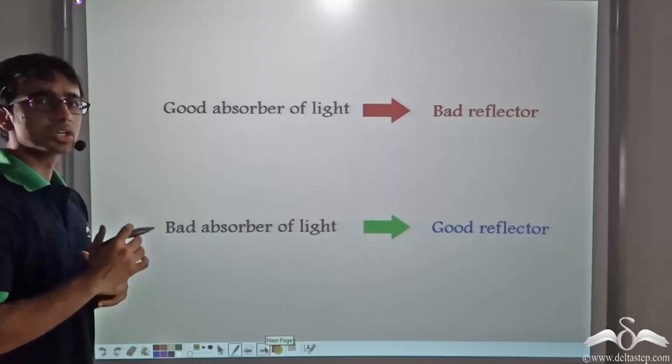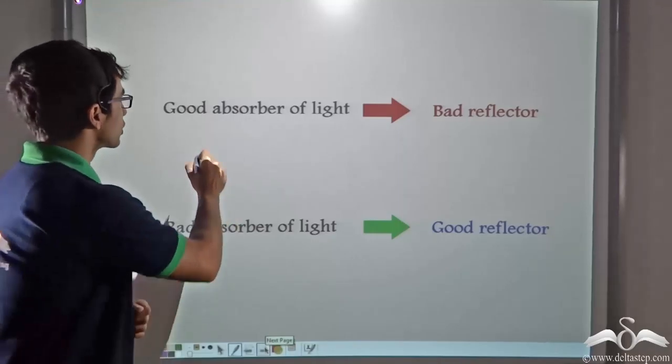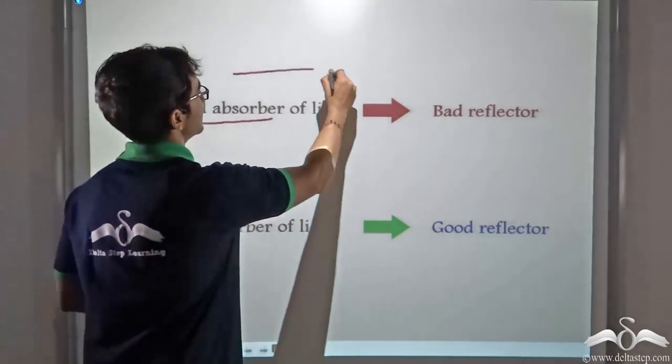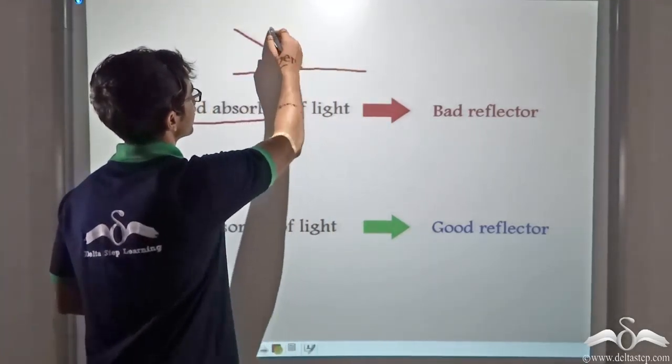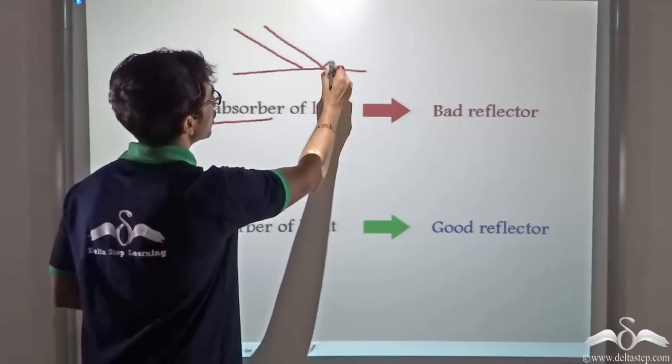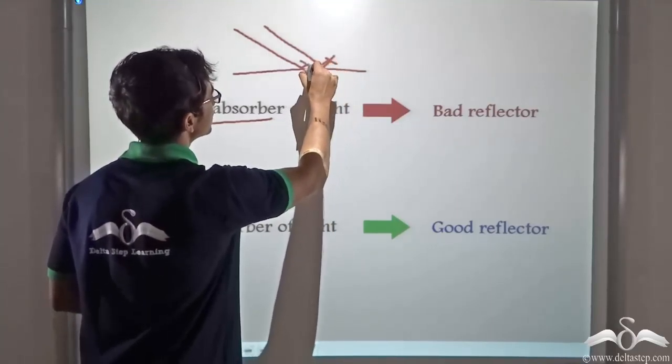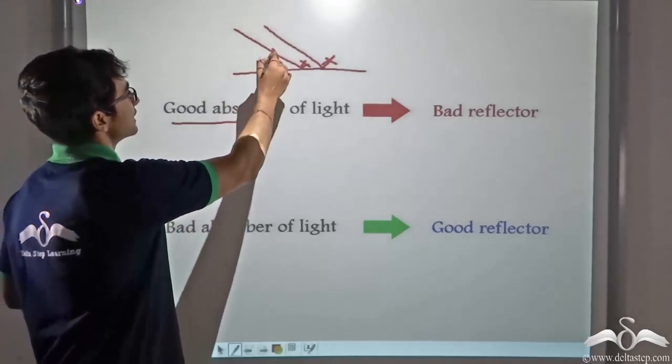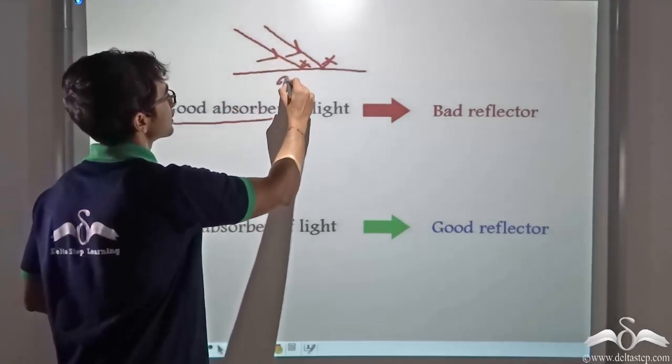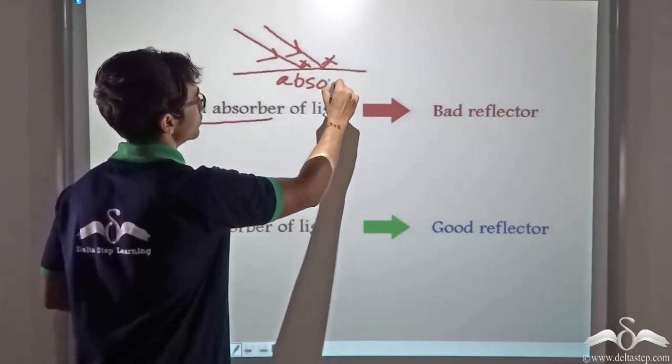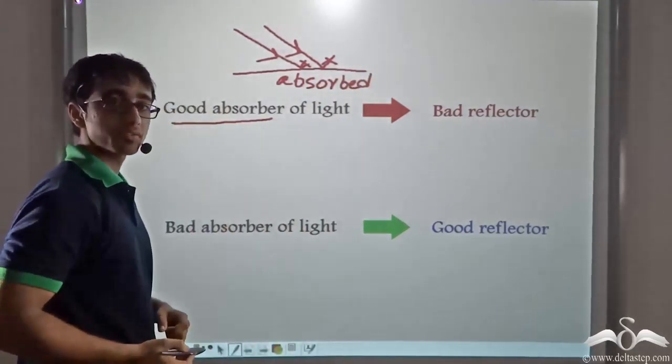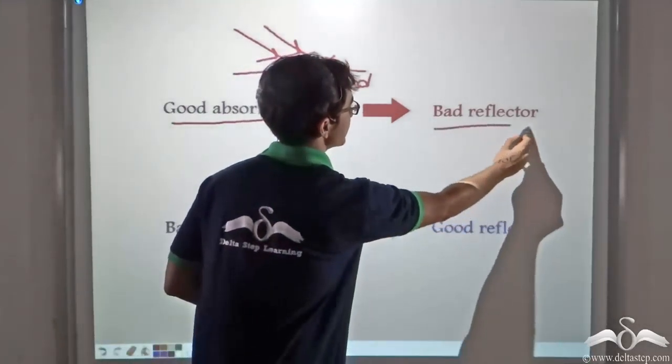What is a good absorber of light? A good absorber of light is that on which if light falls, little or almost no amount is reflected back. That is most of the light that is falling on the surface is absorbed. So clearly a good absorber of light is a bad reflector.